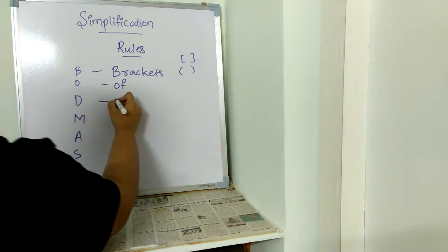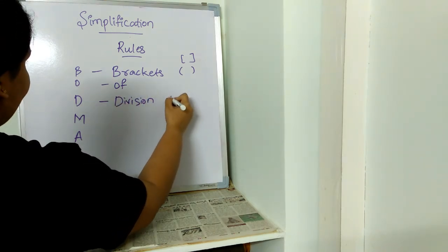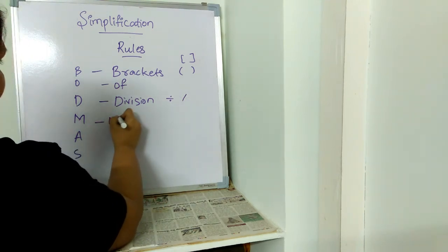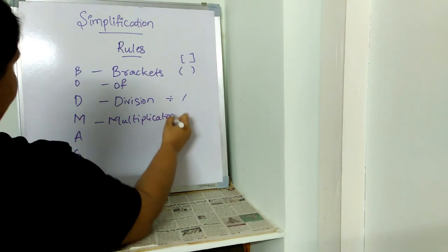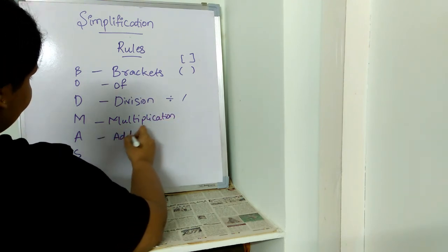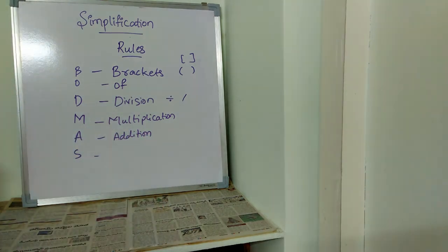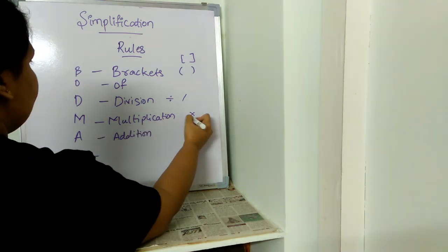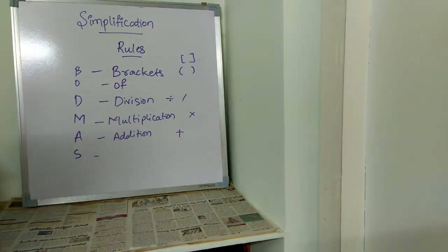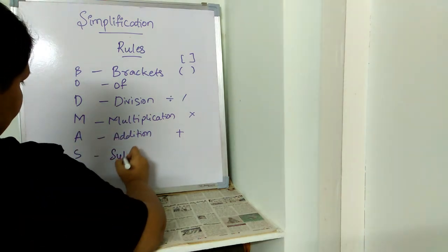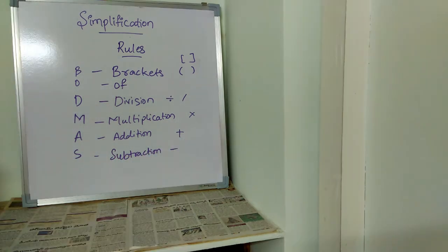D stands for division. We all know what is division, divided by. M stands for multiplication. A stands for addition. And S stands for subtraction.